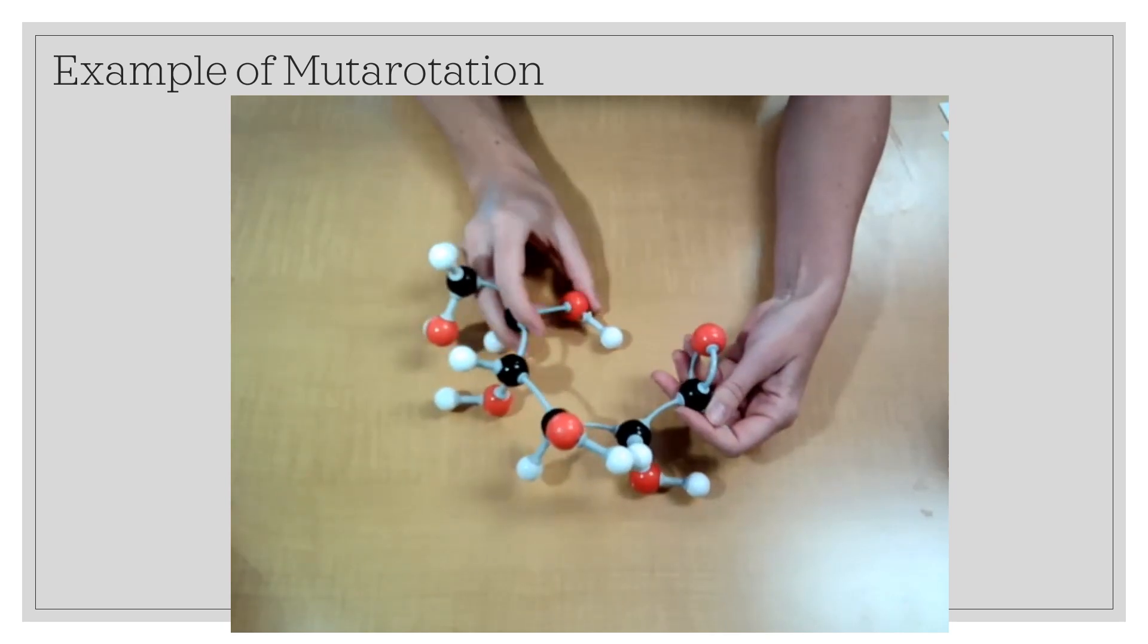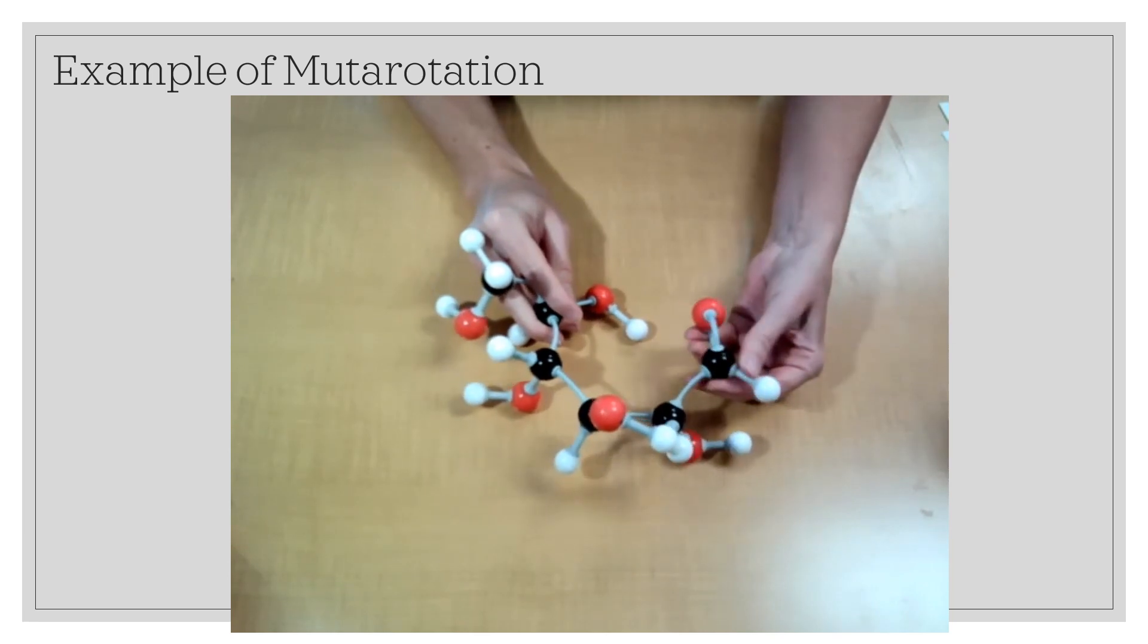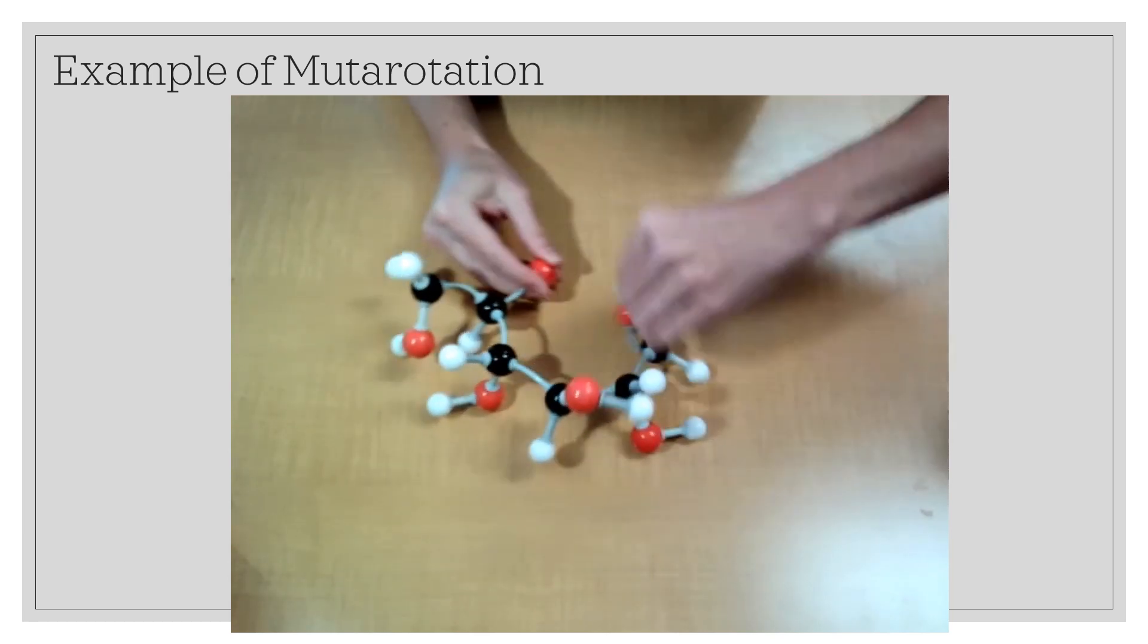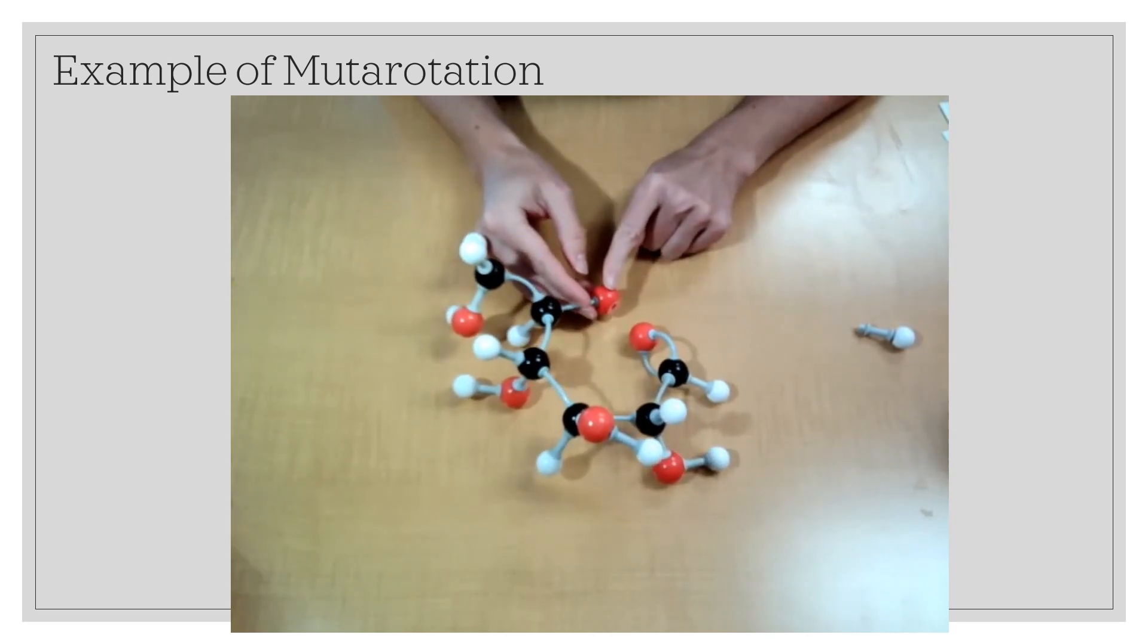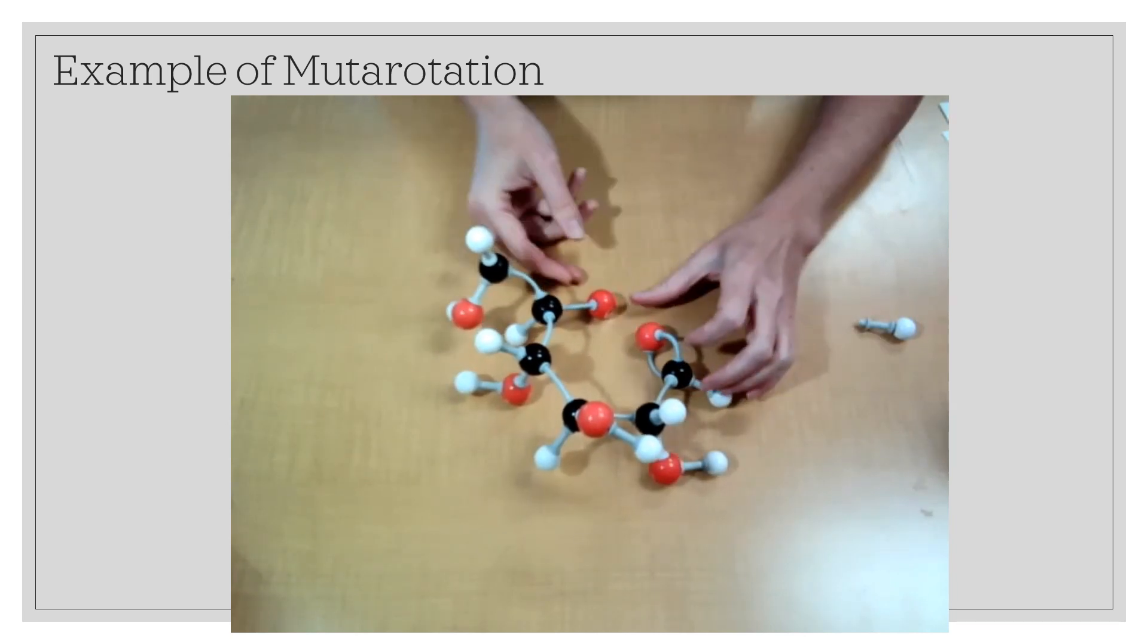We know that the hydroxyl group on C5 is going to interact with the carbonyl that in an aldose is on C1. So I'm going to go ahead and remove my hydroxyl group because this oxygen from C5 is going to become part of the ring. This is the oxygen in the ring.